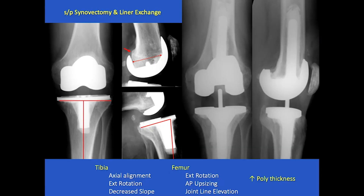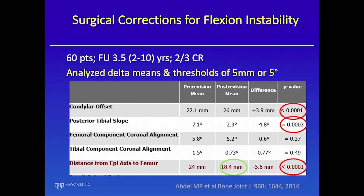When we revised him, we corrected the tibial slope, increased the offset, elevated the joint line with a much thicker poly — that's how the problem got solved. In the last paper published here, we looked at all the different variables. We decreased the epicondyle-to-surface distance, and the bottom line is we corrected more than 10 millimeters in a combined way to gain control of the flexion space.